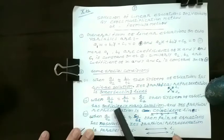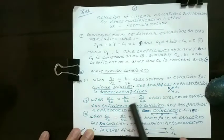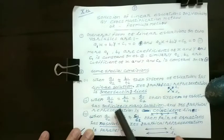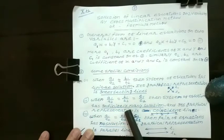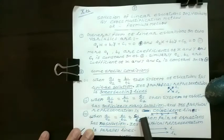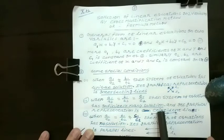Now, if the ratio of a1 upon a2, b1 and b2, and c1 and c2, that is a1 upon a2 equals b1 upon b2 equals c1 upon c2, these ratios are equal to each other. Then the system of equations has infinitely many solutions. In Hindi, anant hal hoongi.